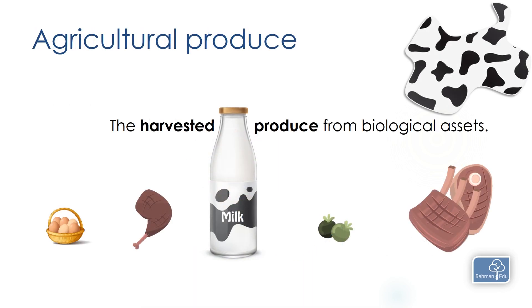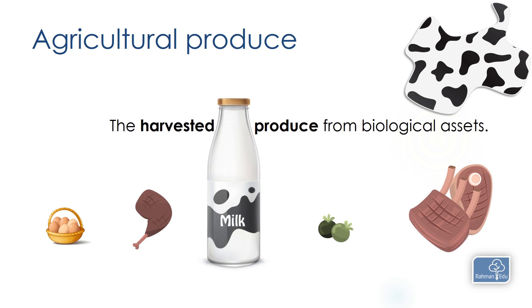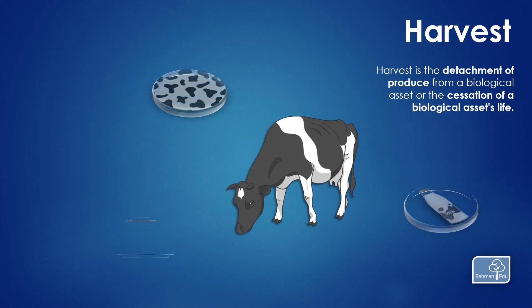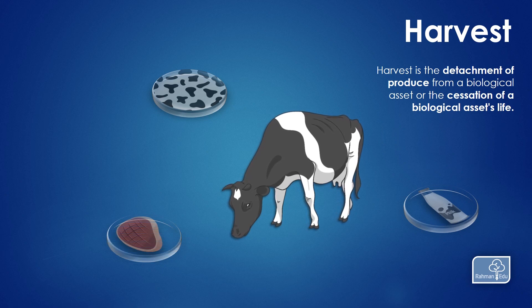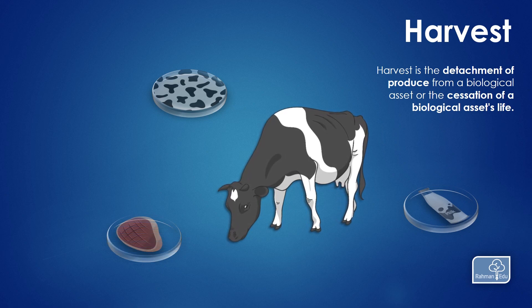The next thing to understand is what is agricultural produce. Agricultural produce is the harvested produce from a biological asset, such as milk, meat, eggs, etc. And what is a harvest? Harvest is the process of detachment of produce from a biological asset, or the end of the biological asset's life. For example, taking milk from a cow — that process is harvest.